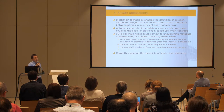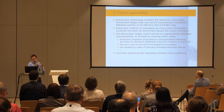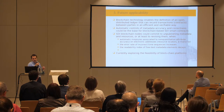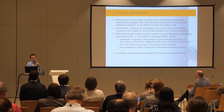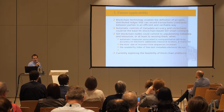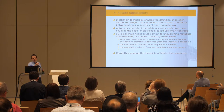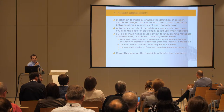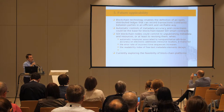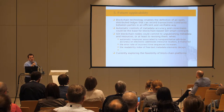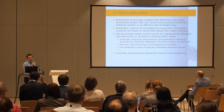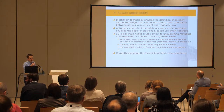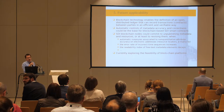About the future, we would like to combine this method with blockchain technology. We would like to use the automatic controls of metadata accuracy and correctness as the base for blockchain-based SDI smart contracts. For example, SDI nodes could commit to unpublishing metadata and resources — or at least to revising them — when automatic measures associated with non-quantitative attribute accuracy on electronic addresses fail, or when the error rate of incorrect time sequences increases, or when the readability index of free text metadata elements decays.